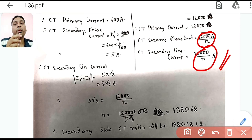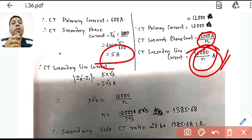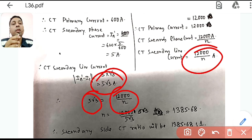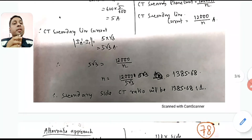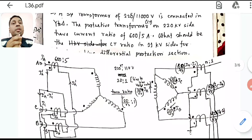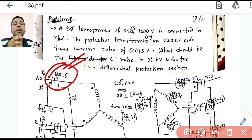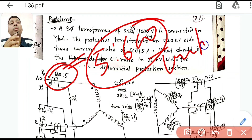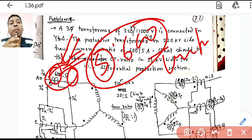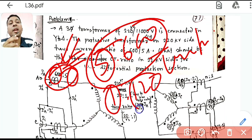For normal operation in a differential scheme, the currents on both sides entering the relay must be equal. Setting 12,000/n equal to 5√3 gives the required CT ratio n. Note that a CT ratio of 600:5 means a current ratio — if 600 A flows in the primary then 5 A flows in the secondary — and the actual turns ratio is the inverse: 5:600, or 1:120.